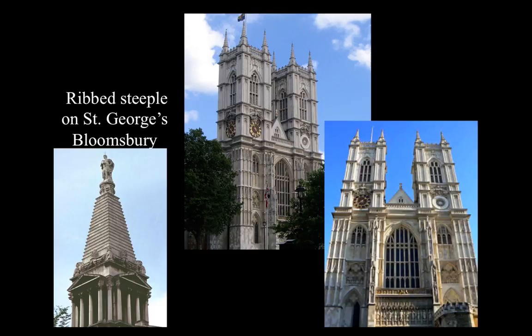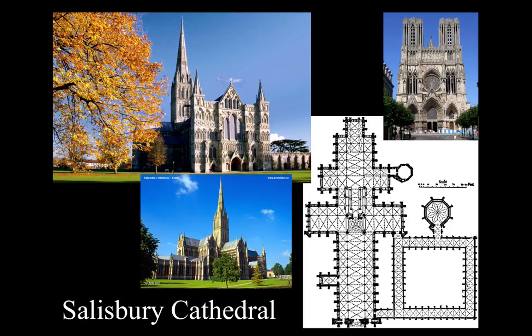Another quite noteworthy English chapel is Salisbury Cathedral, which required over 40 years for construction and was completed in 1320. It is often compared with Amiens Cathedral in France, because both were built around the same time, making extremely apparent the differences between the traditional English Gothic and the traditional French Gothic styles even of the exact same time period. Salisbury is said to embody the essential characteristics of the English Gothic style, making it a perfect example of comparison.